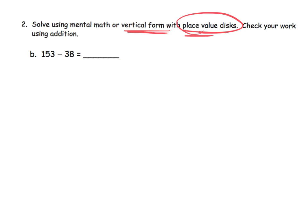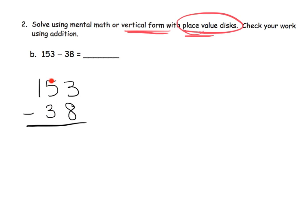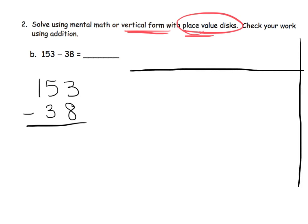Let's start by writing the problem in vertical form. Parents and teachers, make sure that students have lined up the ones on top of the ones, the tens on top of the tens, and the hundreds on top of the hundreds. In this case, there are no hundreds on the bottom. Now that I've lined up the vertical form nice and neat, I'm going to go over here on the side and do the place value chart.